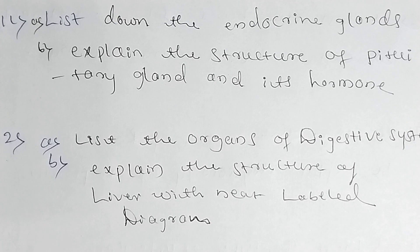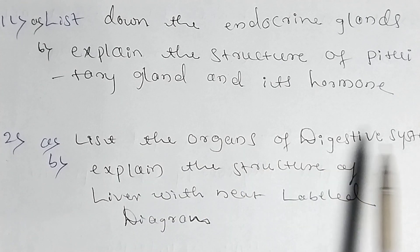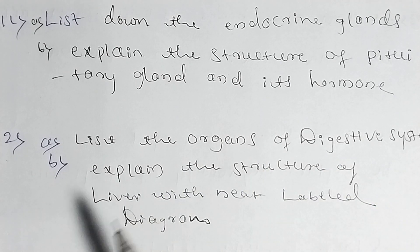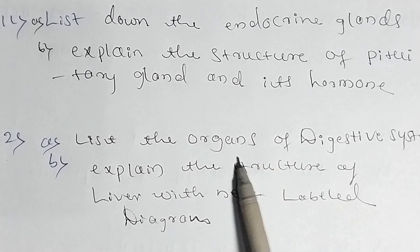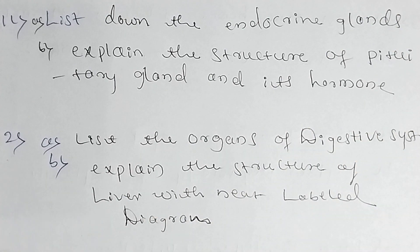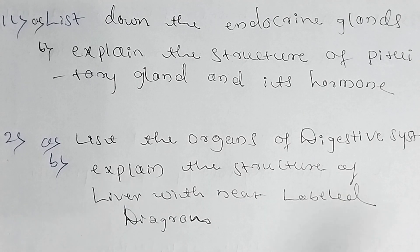Next question: list the endocrine glands and explain the structure of the pituitary gland and its hormones. Next question: list the organs of the digestive system — esophagus, stomach, large intestine, small intestine, pancreas — and draw a neat labeled diagram of the liver with its structure.